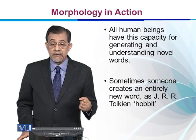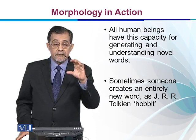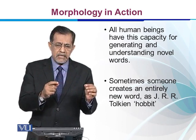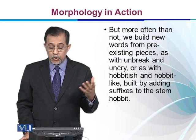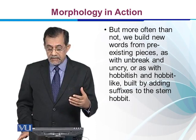Sometimes someone creates an entirely new word. For example, J.R.R. Tolkien used the word 'Hobbit' for a creature of small size with hairy feet. When this word was coined, certain other morphemes — other pieces of language — could be added to 'Hobbit' to make it 'Hobbitish' or 'Hobbit-like.' But more often than not, we build new words from pre-existing pieces, as with 'unbreak' and 'uncry,' or as with 'Hobbitish' and 'Hobbit-like,' built by adding suffixes to the stem 'Hobbit.'